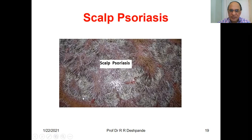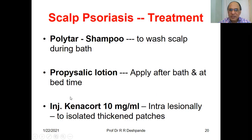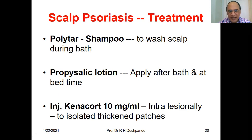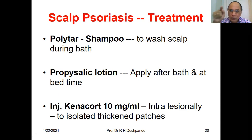For scalp psoriasis, use Polytar shampoo to wash the scalp during bath, then Proficelic lotion after bath and at bedtime. Injection Kenacort 10 mg per ml intralesionally can be given if there are isolated, separate, thick patches — locally you can give steroid Kenacort. Otherwise use shampoo and lotion.